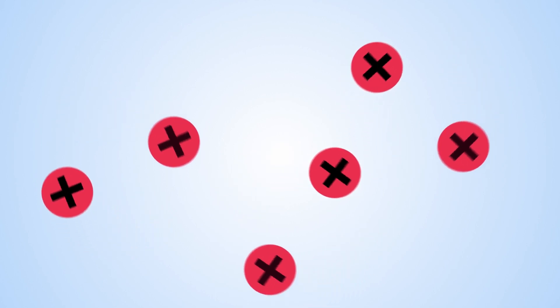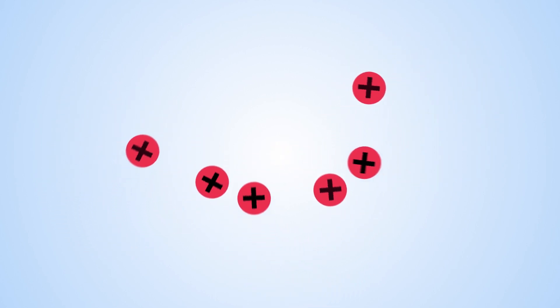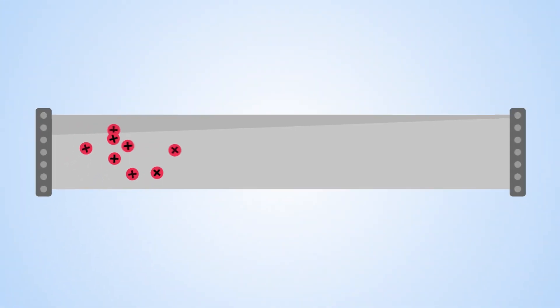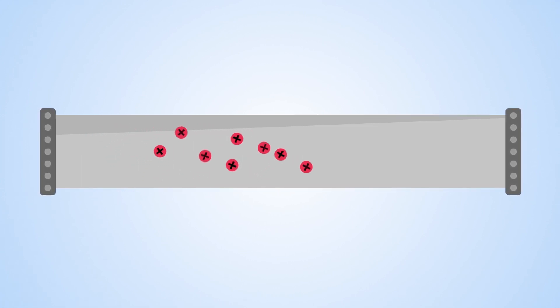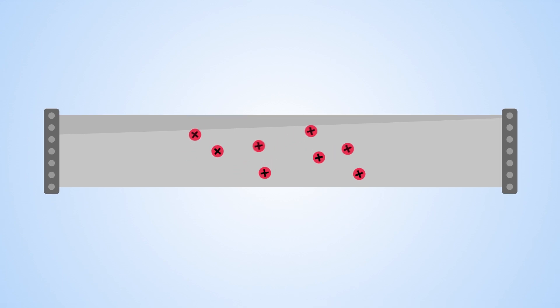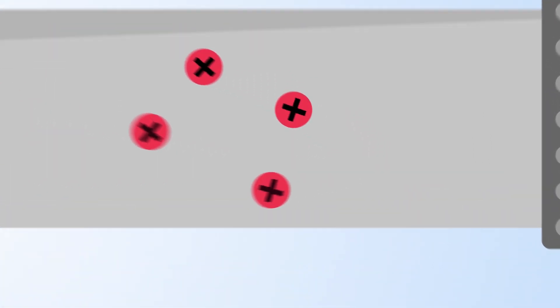Ions can be incredibly useful tools to researchers in many different fields. With the right equipment, they can be arranged into beams, accelerated to around 10% of the speed of light and focused down to widths 100 times smaller than that of a human hair.